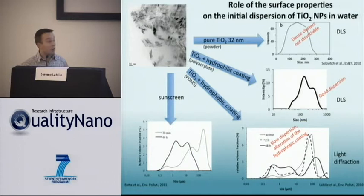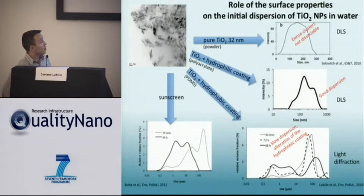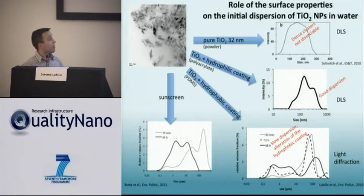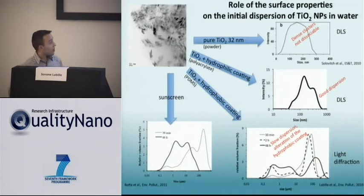This sub-micronic fraction is particularly interesting since it corresponds to particles that are stable in suspension. The last sample consists of a commercial sunscreen bought in a supermarket, which shows something very similar: initially large hydrophobic material which, with time, tends to disperse more and more into the sub-micronic size fraction. My colleague Jerome Rose will talk more about this behavior and the mechanisms behind this observation.